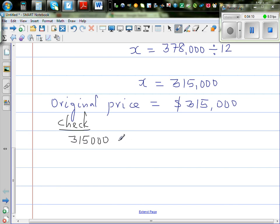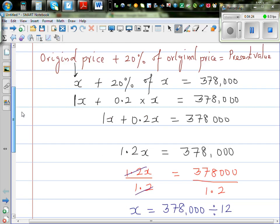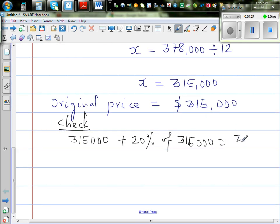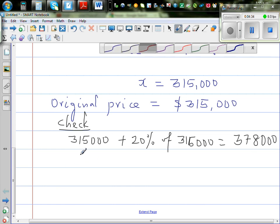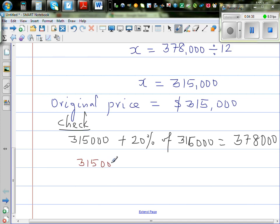315,000 plus 20% of 315,000 should give me the present value, 378,000. Let's do this without the calculator. 315,000 is 315,000. 20% of this: 10% of 315,000 is 31,500. You just remove one zero or divide by 10. So 20% would be double of this, which is 63,000.